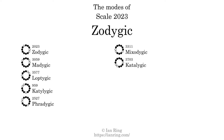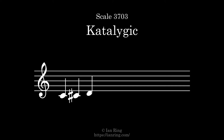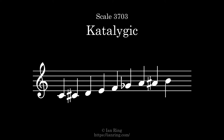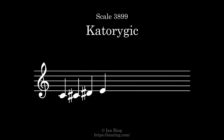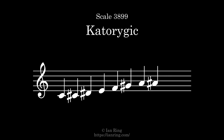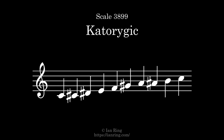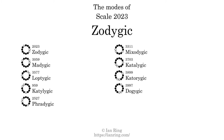The seventh mode is scale 3703, also known as Catalogic. It sounds like this. The eighth mode is scale 3899, also known as Catalogic. It sounds like this. The ninth mode is scale 3997, also known as DigiGic. It sounds like this.